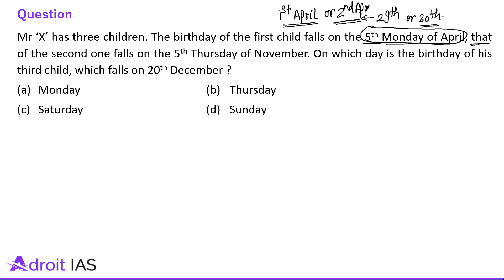The next information is that the 2nd child falls on the 5th Thursday of November. November is the same as April because both months have 30 days. So the 5th Thursday of November means either 1st November is Thursday or 2nd November is Thursday.